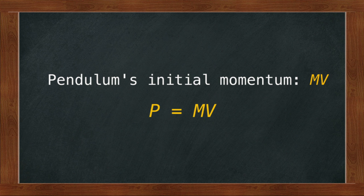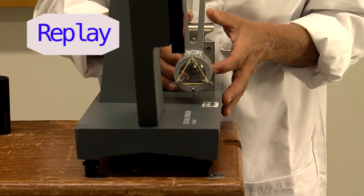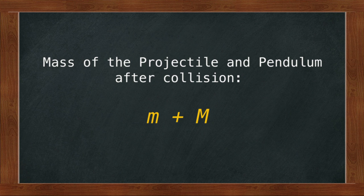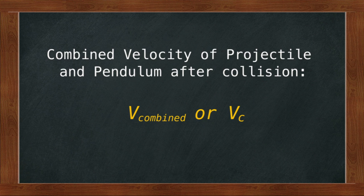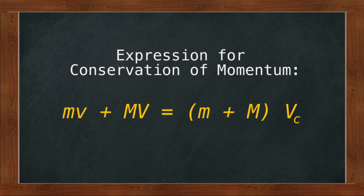The momentum of the projectile before collision is mv, where small m is the mass of the projectile and small v is the projectile's initial velocity — the quantity we are after. I will express the pendulum's momentum using capital M and capital V, since it is physically larger. After collision, the projectile and pendulum move together as one system, so the combined mass is little m plus big M, and their shared velocity is v subscript c. Our expression for conservation of momentum is: mv + MV = (m + M)v_c.